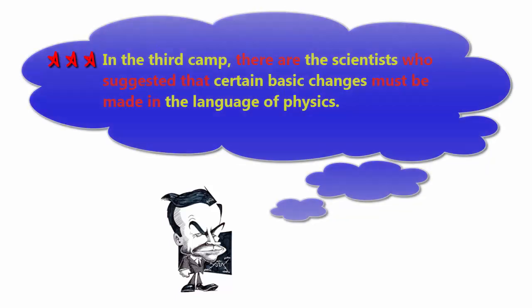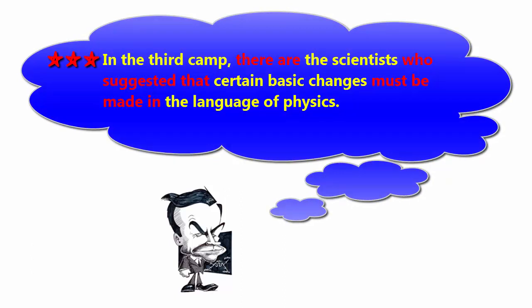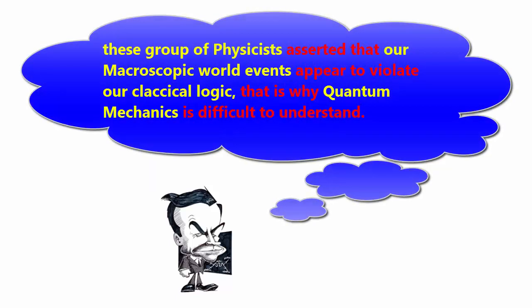In the third camp, there are the scientists who suggested that certain basic changes must be made in the language of physics. This group of scientists asserted that our microscopic world events appear to violate our classical logic. That is why quantum mechanics is difficult to understand.